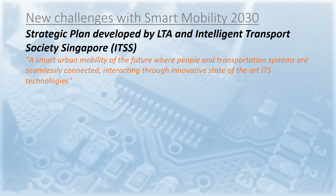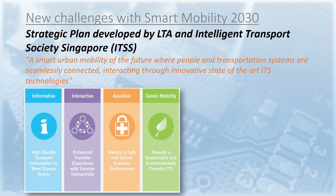Many of those challenges are reflected in Smart Mobility 2030. This is a strategic plan developed by the Land Transport Authority of Singapore, LTA for short, together with the Intelligent Transport Society Singapore, or ITSS. The strategic plan is working towards a smart urban mobility of the future where people and transportation systems are seamlessly connected, interacting through innovative state-of-the-art ITS technologies — ITS standing for Intelligent Transportation Systems.